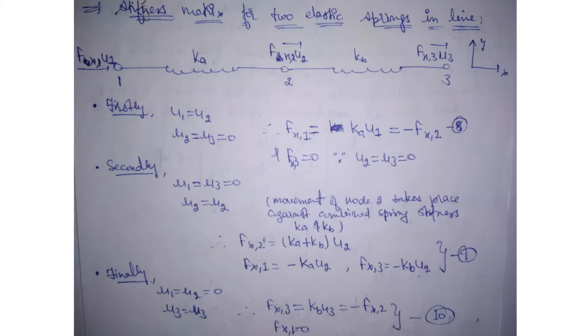Firstly, we will apply the method from the previous part for a single spring. We will do U1 equals U2 and U2 equals U3 equals 0, keeping node 2 and node 3 in static position. Fx1 will be Ka·U1, Fx2 will be the reaction force, and Fx3 will be 0 because displacement is 0 here.